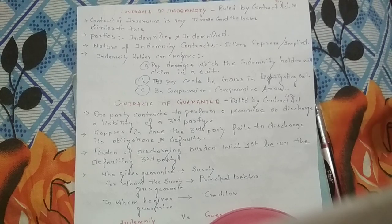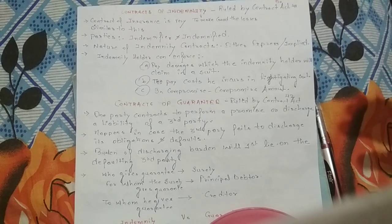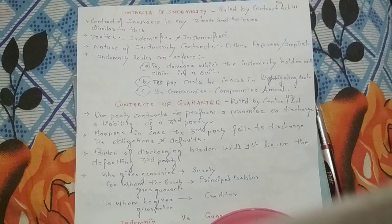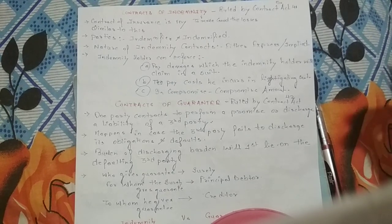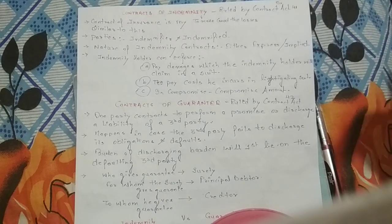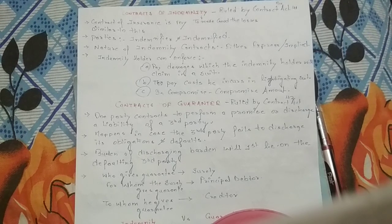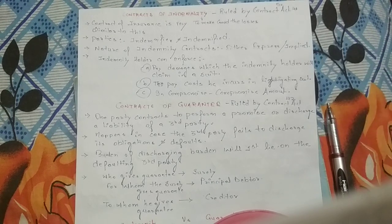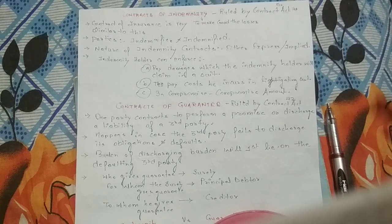The nature of the indemnity contract is either express or implied. Express means everything will be written — for example, if a car accident insurance is taken, everything will be specified: the car number, registration number, engine number, and all those things will be written showing that this car is covered. Implied means there are some conditions which are universally understood and need not be written. For example, in an accidental cover for a car, it doesn't matter whether the accident took place by fire or by some other party — an accident is implied to have happened through any means.